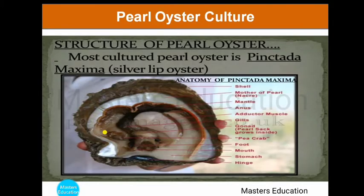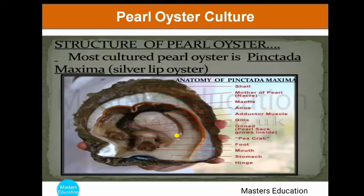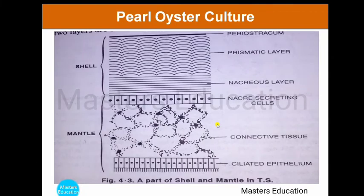The structure of the pearl oyster: the most cultured pearl oyster is Pinctada maxima, which produces silver-colored pearls. Looking at the well-labeled structure of this pearl oyster, the outermost layer is the shell, then there is a layer called the mantle, and in between the mantle and the shell there is a layer called the mother of pearl, that is, nacre.